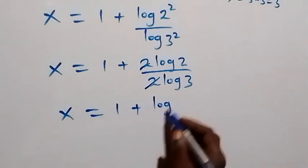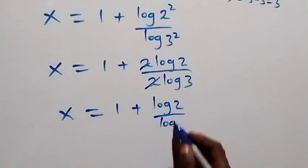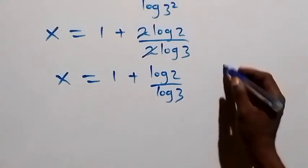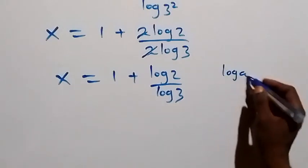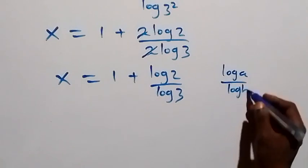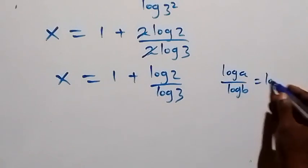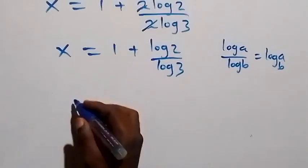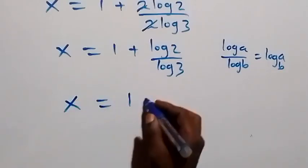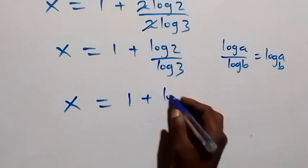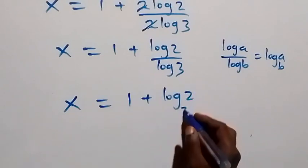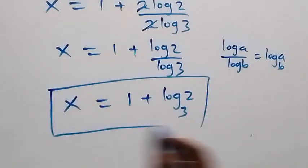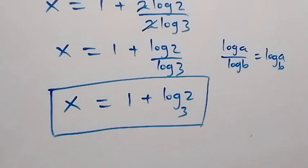When we apply the change of base formula, log a over log b is the same thing as log a to base b. So this becomes x equals to 1 plus log 2 to base 3. This is the value of x in this given problem.